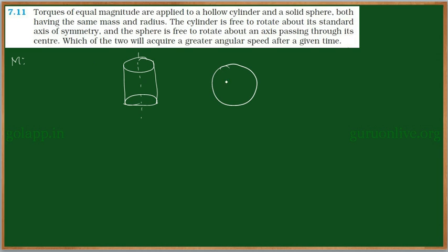And we have a solid sphere, which is also rotating around an axis which is passing through its center. Both have same mass and the same radius, and they have their own moment of inertia.